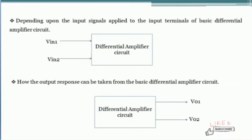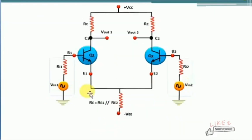The first characteristic depends upon the input signals applied to the differential amplifier circuit. For this differential amplifier circuit, as you observed in the previous slide, we have a basic differential amplifier circuit with two inputs. Depending upon the signals that are applied to the two terminals of the differential amplifier, it is classified further.